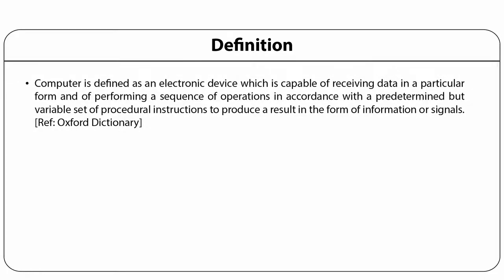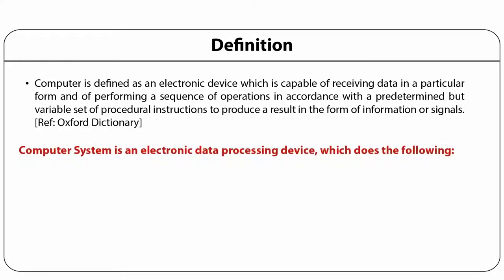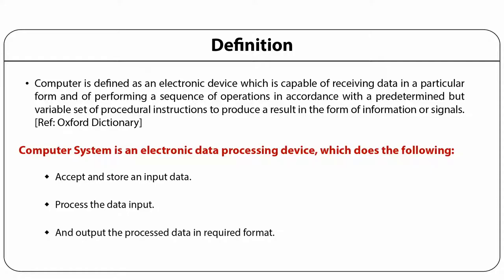Oxford Dictionary defines computer as an electronic device which is capable of receiving data in a particular form and performing a sequence of operations in accordance with a predetermined but variable set of procedures or instructions to produce a result in the form of information or signals. The computer system is an electronic data processing device which accepts and stores input data, processes the data input, and outputs the product.